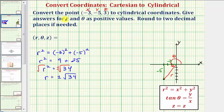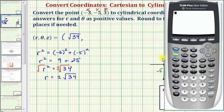Now we take the square root of both sides of the equation. Notice we'll have two solutions here: r equals plus or minus square root thirty-four. But we are asked to use a positive value for r, so let's use the exact value of square root thirty-four. Notice we do have the option of rounding to two decimal places, so we could express r as approximately 5.83.